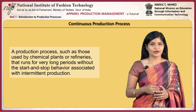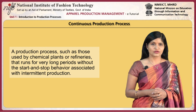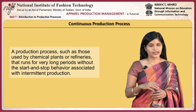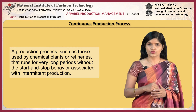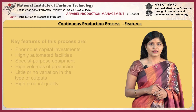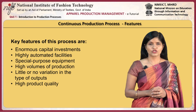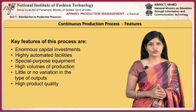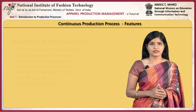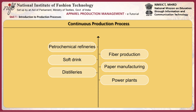Continuous production processes are used in chemical plants or refineries, running for very long periods without the start-and-stop behavior of intermittent production. Key features include enormous capital investment, highly automated facilities, special purpose equipment, high volumes of production, little or no variation in type of outputs, and high product quality. Also known as mass flow production or assembly line production, it is used in petrochemical refineries, soft drink production, distilleries, fiber production, paper manufacturing, and power plants.